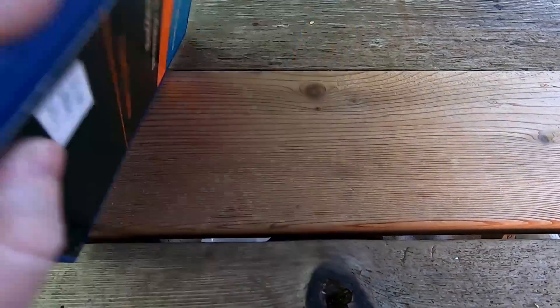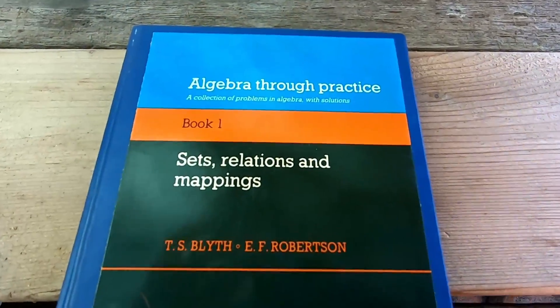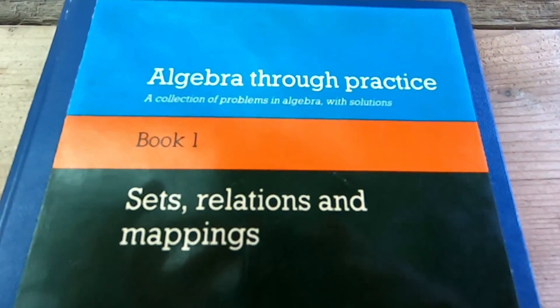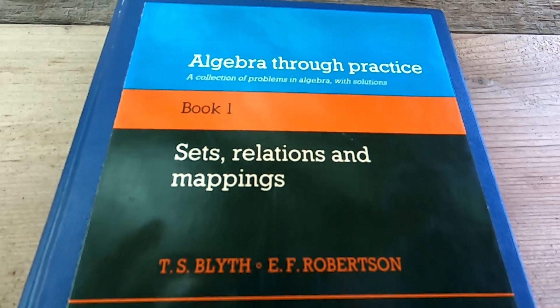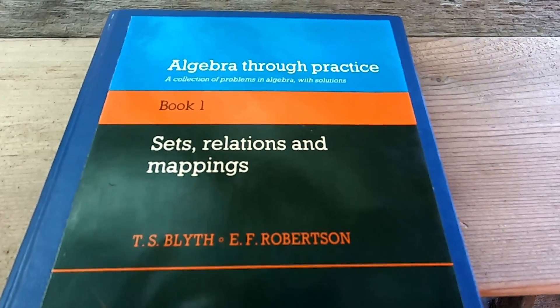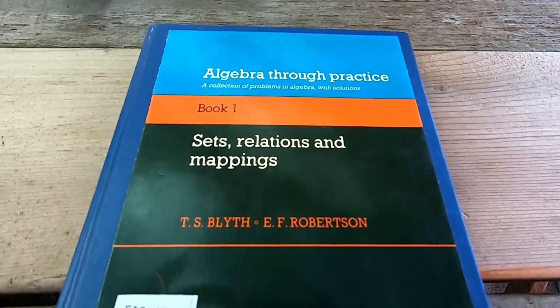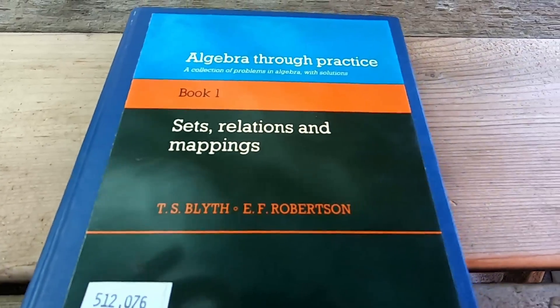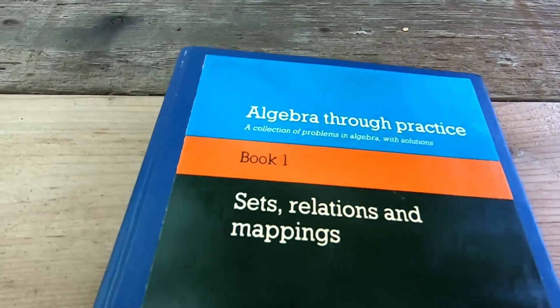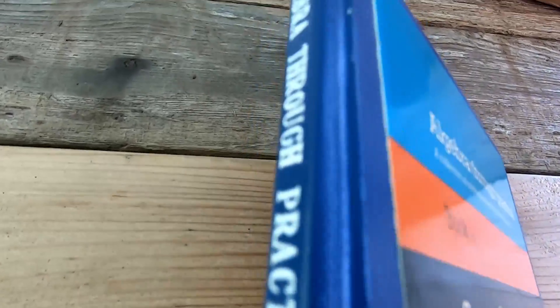Okay, so what is this book? Let me go ahead and turn it over so you can see it. This is book one of the Algebra Through Practice series. It's on sets, relations and mappings and the author is TS Blith and EF Robertson. This is actually a hardcover of the book which I was surprised even existed.